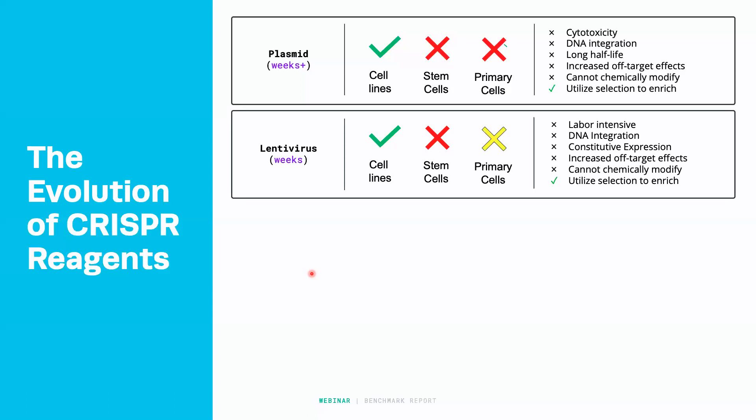That means, as with plasmids, regardless of whether that edit has already been made, the Cas9 and guide RNA are continually expressed within that cell population, which increases off-targets over time. So even if you have a stable edited population, if that lentivirus is still producing those components, you're going to get modification of that line due to off-targets as the cell line progresses in culture. With lentivirus, you also can't chemically modify the guides, but you can utilize selection to enrich — and again, I'll cover why that may not necessarily be desirable.